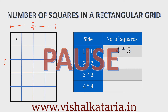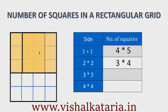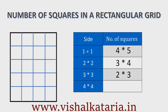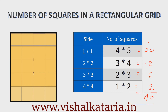The 1 by 1 squares will be 4 multiplied by 5, which is 20. The 2 by 2 squares: 3 along the length and 4 along the width, giving 3 multiplied by 4, which is 12. For 3 by 3: 2 along the length and 3 along the width, giving 3 multiplied by 2, which is 6. And for 4 by 4: 1 along the length and 2 along the width, giving 2. The total comes to 40 squares of different sizes.